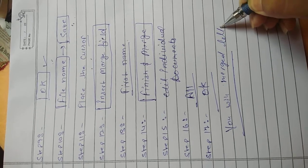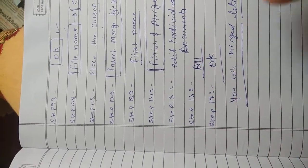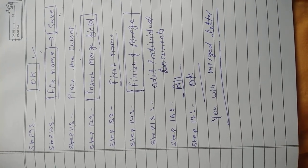Step 5: Click on Select Recipients. When you click on this option, a list will appear on screen. Step 6: Select the Type New List option. Step 7: After clicking on it, a New Address List dialog box will appear on screen. Step 8: Fill the information in every field. If you want to create another entry, click on the New Entry button.